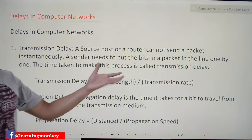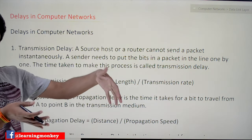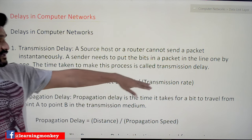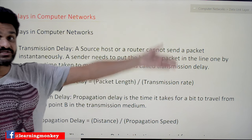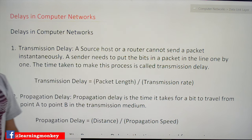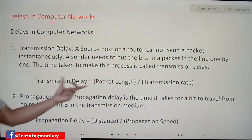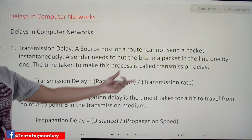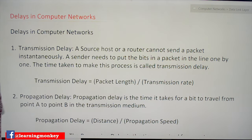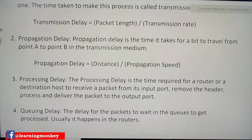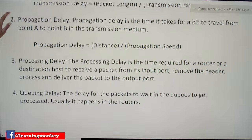So the transmission delay is equal to packet length divided by the transmission rate — that is, the rate at which the transmission is done.